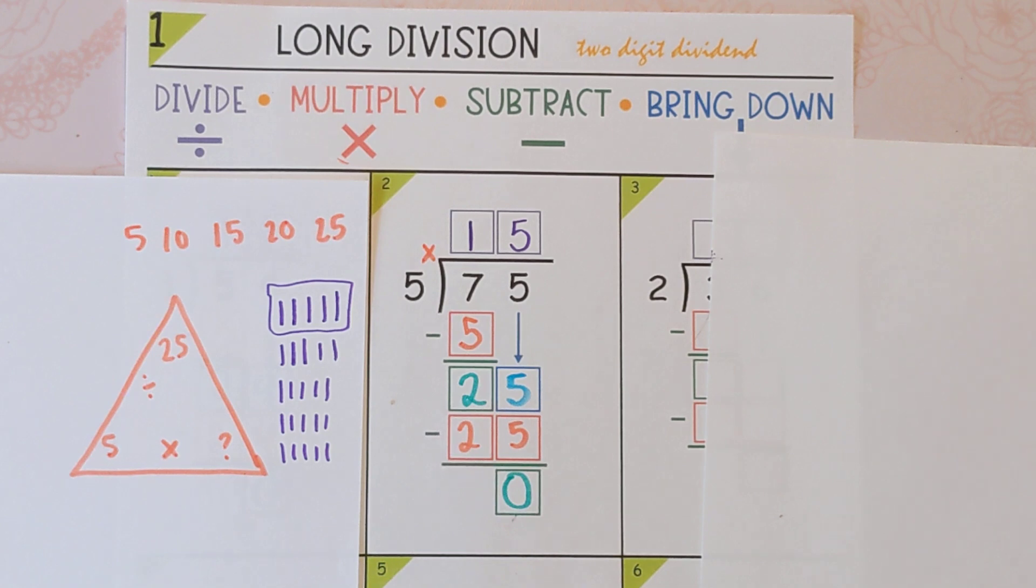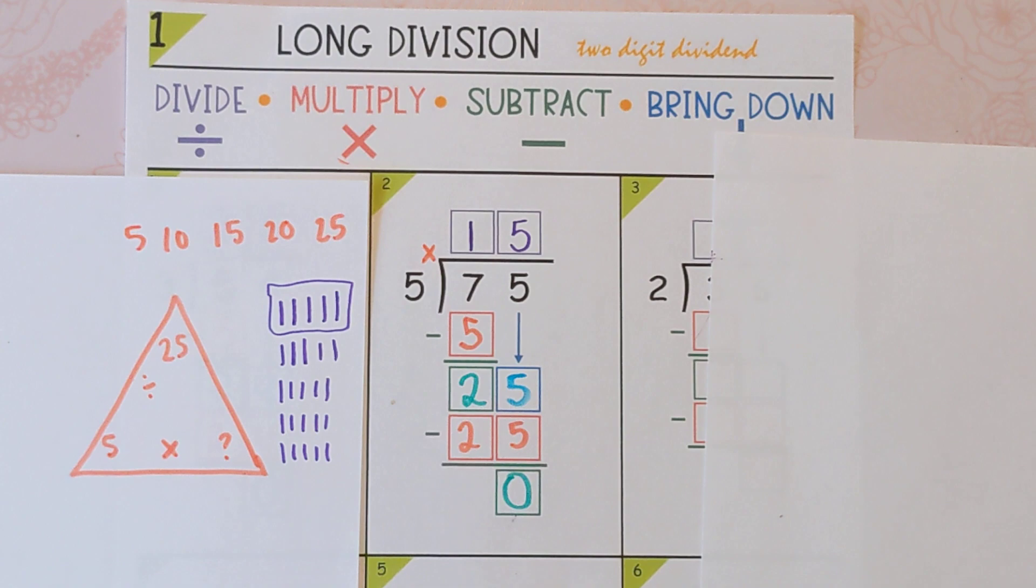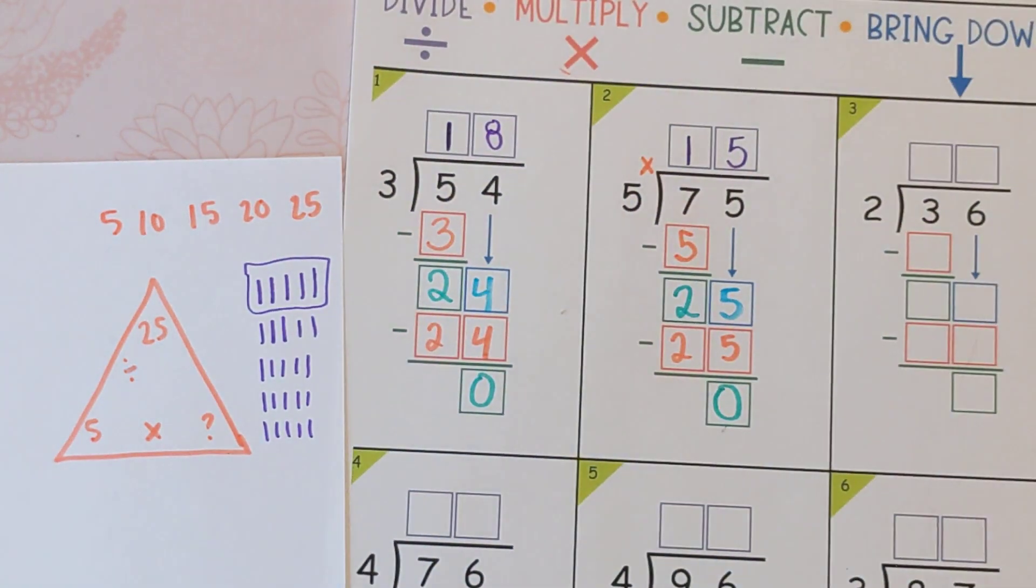And we know we're finished because there's nothing left to bring down. If you wanted to check your answer, you would do 15 times 5 and you would get 75. So I hope this is helpful for you. Grab some paper, whiteboard, follow along with the rest of these and it will feel super easy in no time.